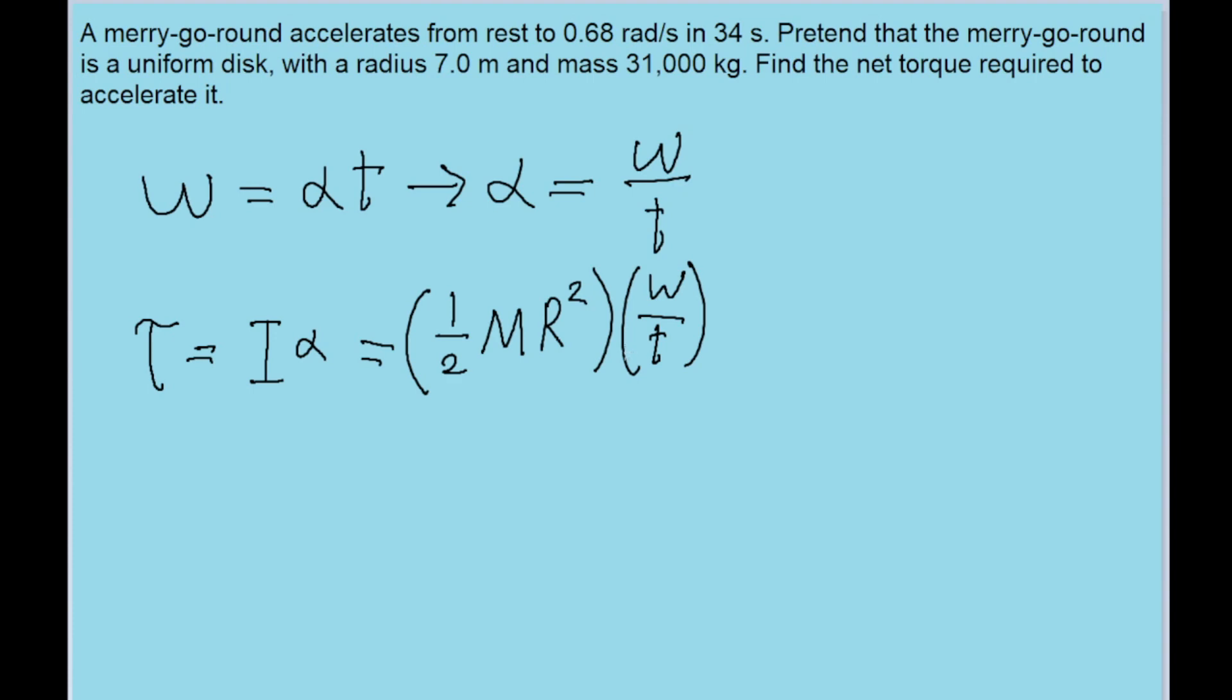All we need to do now is just take the values we're given in the problem and plug it into this equation. So it's 31,000 kilograms for the mass, 7 meters for the radius, 0.68 radians per second for omega, and 34 seconds for t. And if you put this into our calculator, we find a torque of about 1.5 times 10 to the power of 4 newton meters.